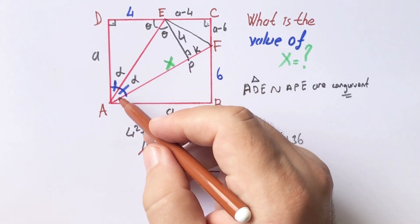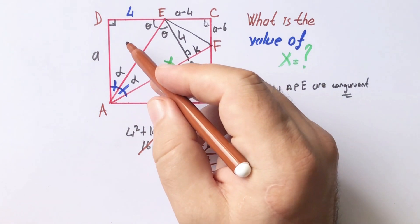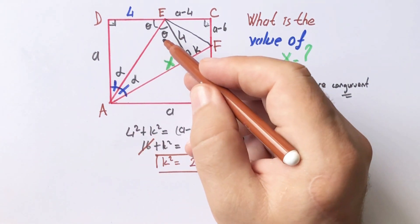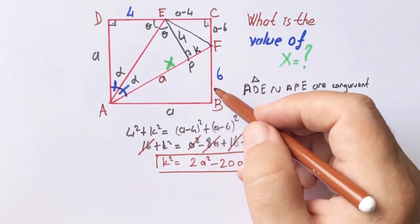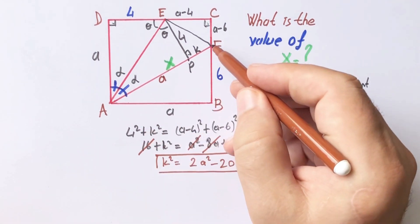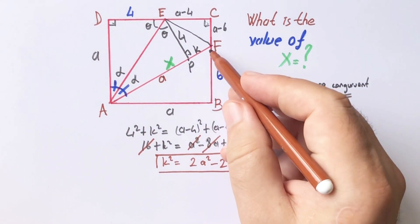This length must be a units because of similarity. So if we apply Pythagorean theorem in this triangle.